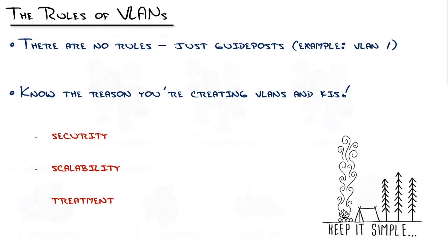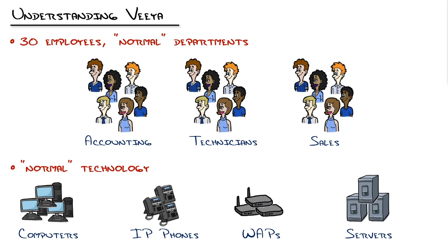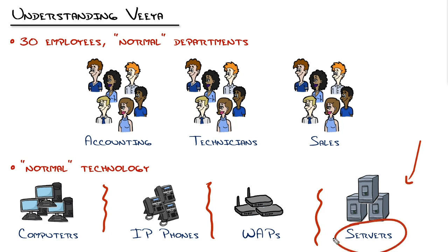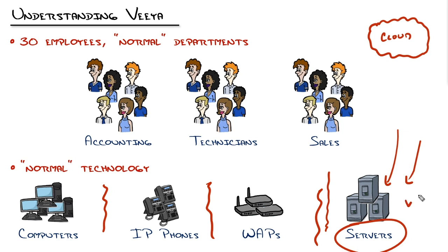Now, if you have a larger organization, you may start dipping into the scalability side of things — maybe hundreds of accountants or thousands of technicians. But with 30 employees, that's not an issue. So let's look at technology: are there security concerns between these technologies? Servers are completely different from everything else — they typically hold the files and services for the local network. A lot of what's stored on servers has changed with the advent of the cloud, like Office 365 and Google Docs. But even if servers just run network services such as DHCP, DNS, and print services, that still represents a completely different security concern and its own VLAN.